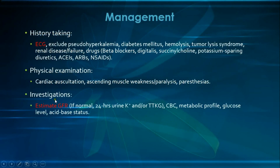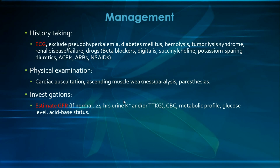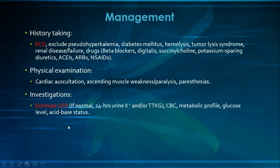For investigations, the first thing we look for is the GFR to assess renal function and include or exclude kidney disease or renal failure. If GFR is normal, we order the 24-hour urine potassium and/or the TTKG (transtubular potassium gradient), as the results are more useful with a normal GFR. It's always a good idea to get a full checkup including urinary electrolytes, urinalysis, CBC, metabolic profile, glucose level, and acid-base status — with glucose and acid-base status being more significant in acute hyperkalemia for assessing transcellular shifts.